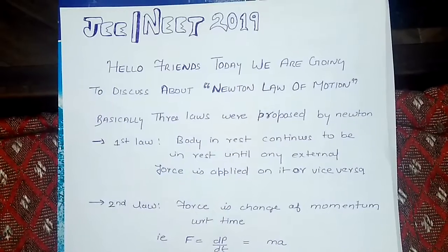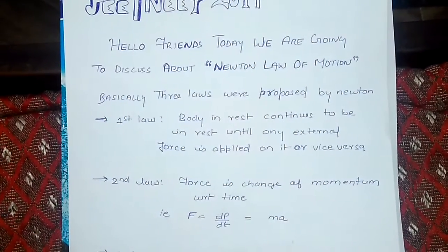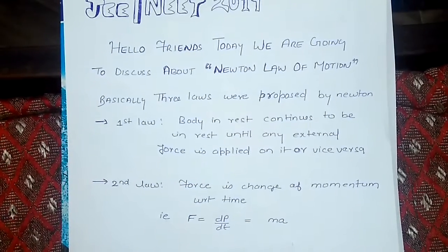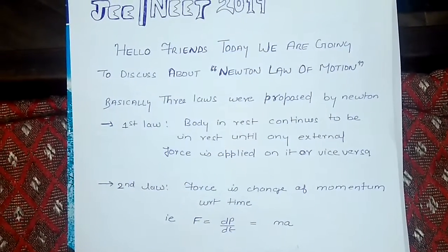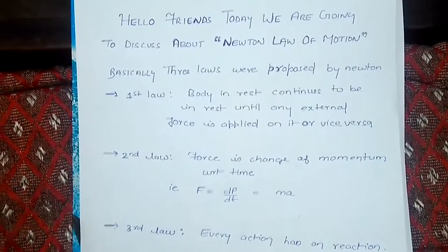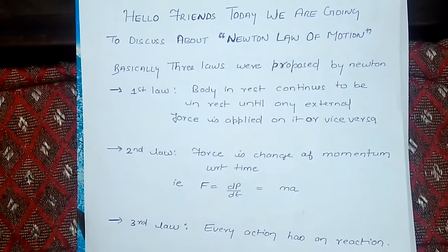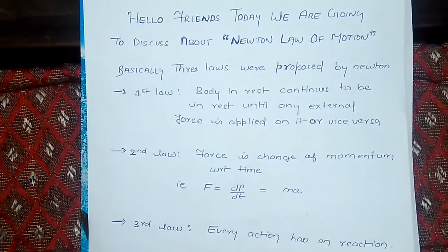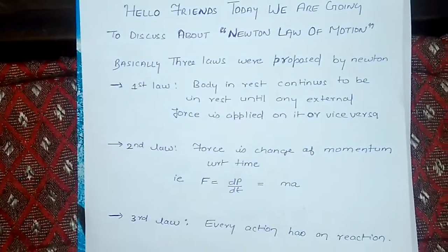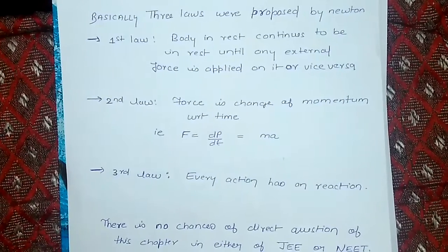Basically, three laws were proposed by Newton. First law: a body at rest continues to be at rest until any external force is applied on it, or vice versa. Second law: force is the change of momentum with respect to time, that is F equals dp upon dt, which is equal to ma. Third law: every action has an equal and opposite reaction.